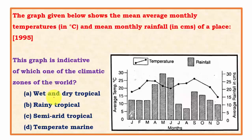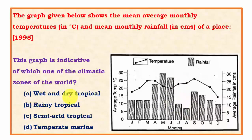Looking at the wet and dry tropical type (savannah climate): the graph shows rainfall around 10 cm average per month, amounting to about 120 cm per annum. The rainfall has summer maxima but even in June and August remains above 6 cm. In wet and dry type, at least one month has rainfall lesser than 6 cm and winters are totally dry. But this graph shows winters with good rainfall, so this option is wrong.